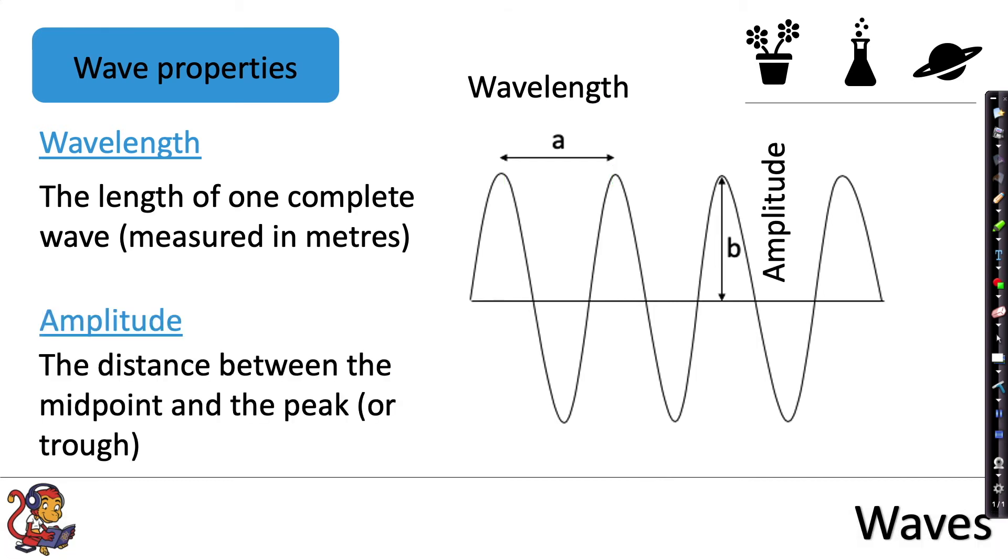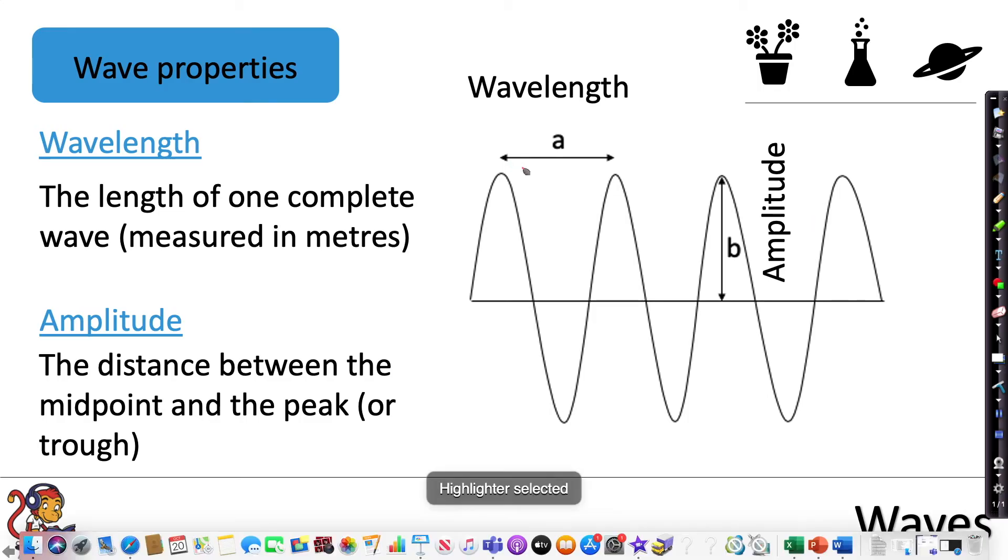Amplitude is the distance between the midpoint and the peak or the midpoint and the trough. So the mistake people make is when they think the amplitude is the height of the whole wave. It's not that. You must be measuring amplitude between this midline here and either the peak or measuring it between the midline and the trough.